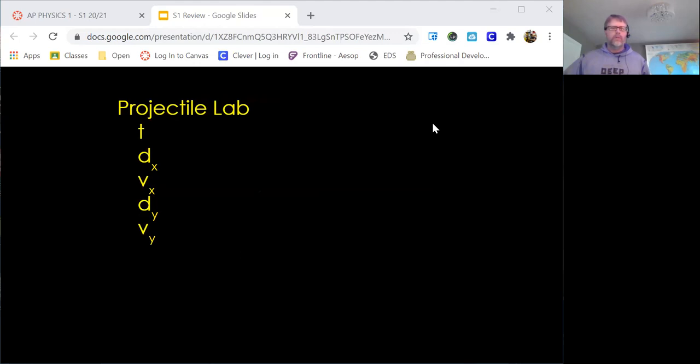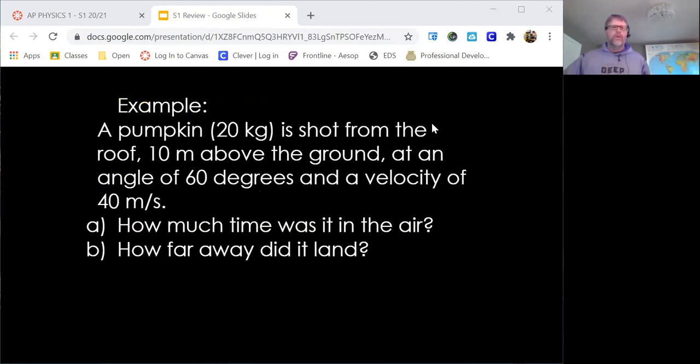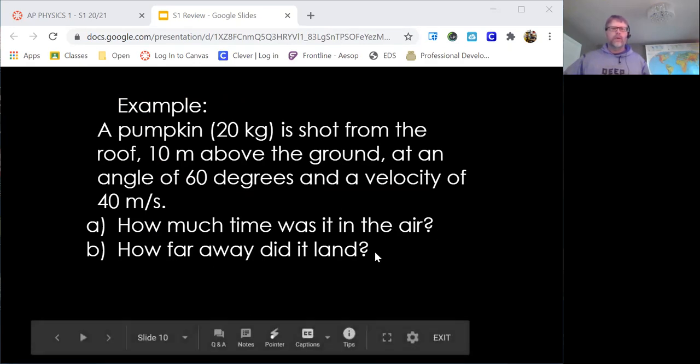We are looking at projectiles in two dimensions. And that was the projectile lab as we launch something off the table and try to figure out where it lands. So there is a pumpkin here that is shot from the roof at an angle, and we want to find out how much time was in the air and how far away did it land.